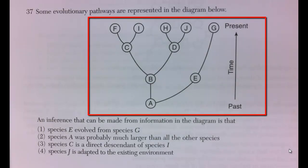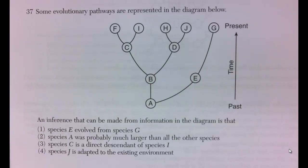The diagram shows a number of different letters and indicates the past and time passing and then the present. The question then continues and states an inference that can be made from information in the diagram is that.